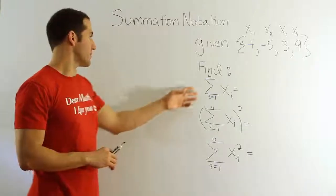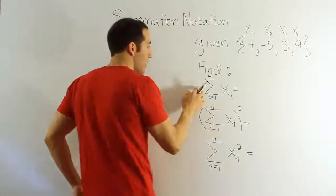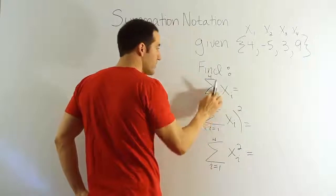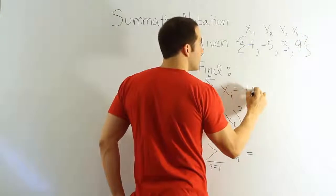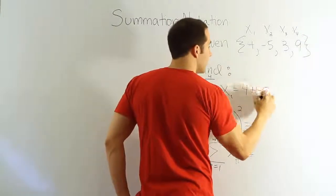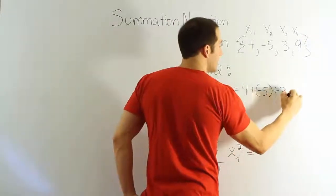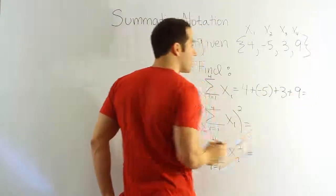Let's start with the first one, which is pretty easy. This one says to sum up the x values from the first to the fourth x value you have. Well, that means to add 4 to negative 5 to 3 to 9. That's what it's asking us to do.